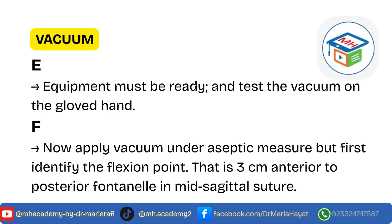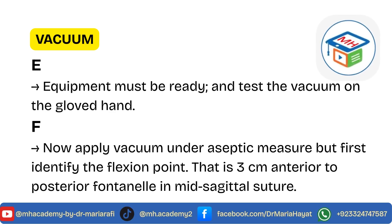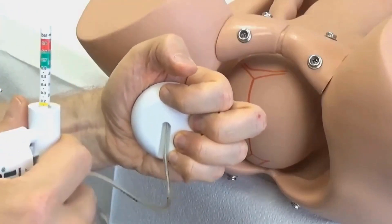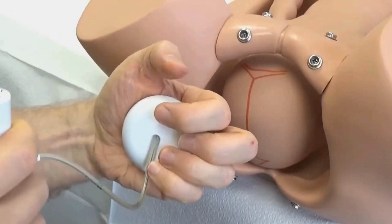E for equipment. Equipment must be ready, and test the vacuum on the gloved hand.